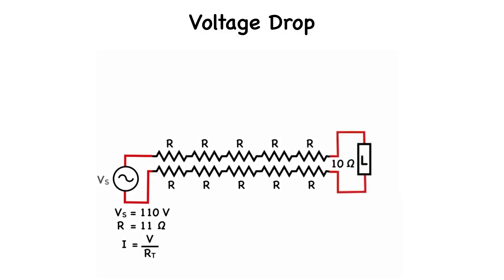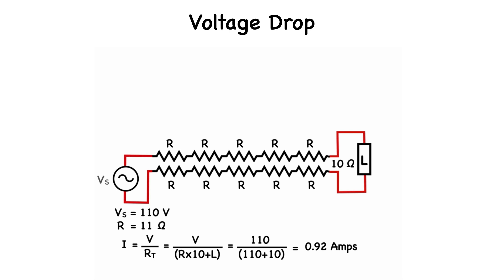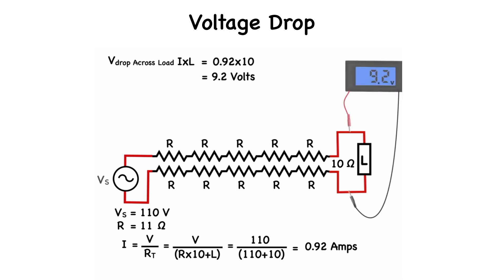Now let's add a load of 10 ohms to the circuit. The total load now becomes the 10 resistors plus the 10 ohms of the load. The current in the circuit is now given by 110 volts divided by 110 ohms plus the load of 10 ohms, which equals 0.92 amps. We are interested in the voltage drop across the 10 ohm load, which is given by the current multiplied by the 10 ohm load, equaling 9.2 volts.